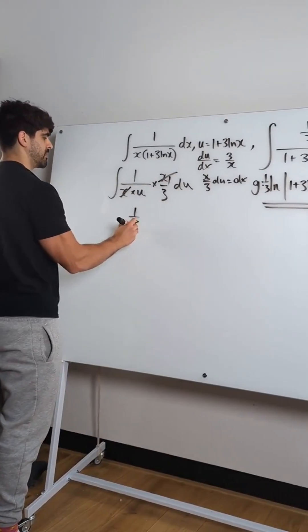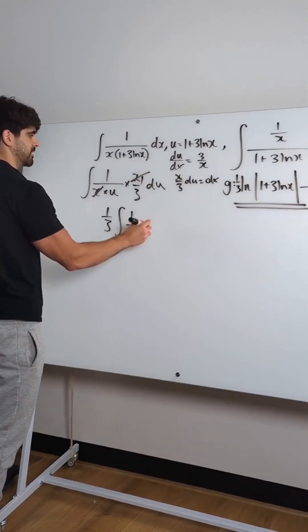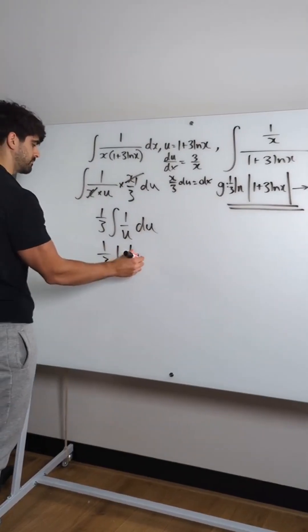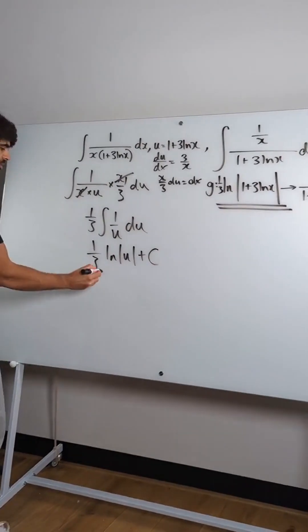You're left with the integral of 1 over u du. That's just ln u. And then you know what u is.